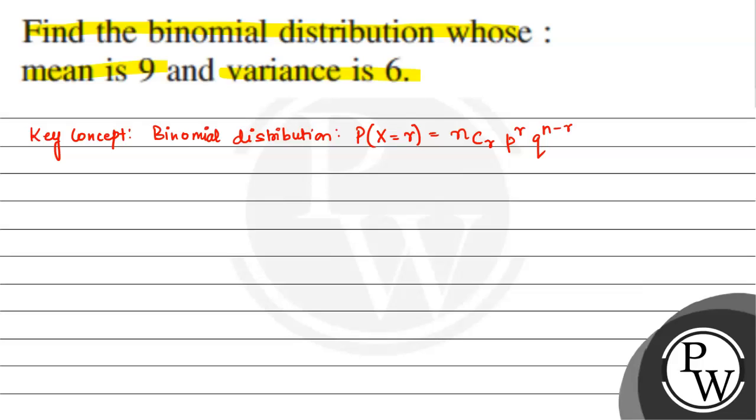p is the number of successes and q is the number of failures. Here we have mu value, which is equal to 9, and variance, which is denoted by sigma square, is equal to 6.